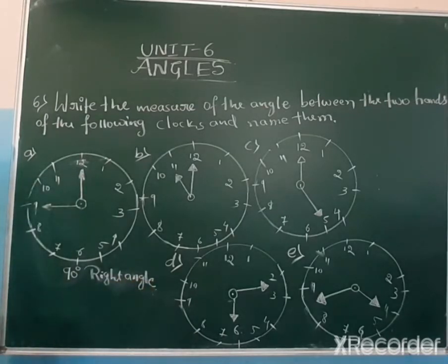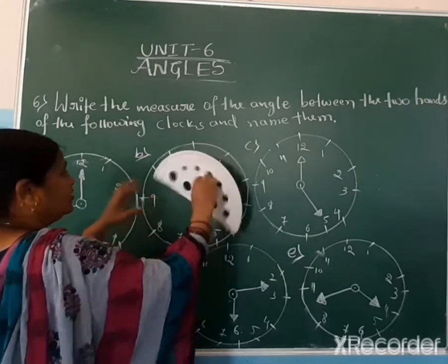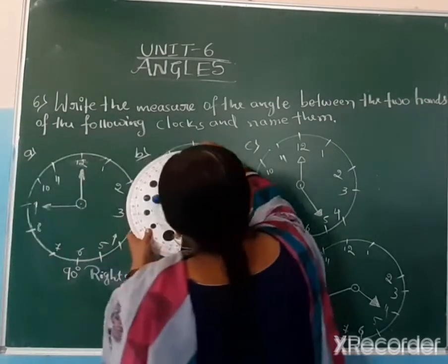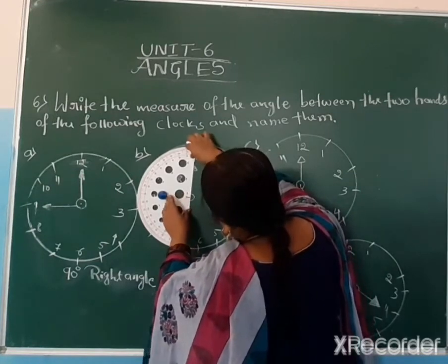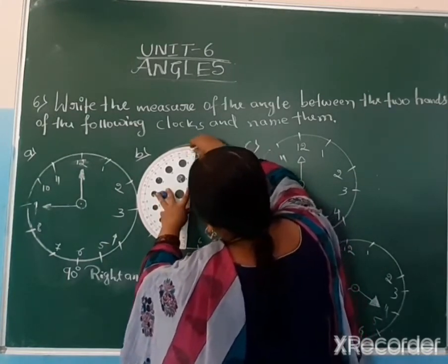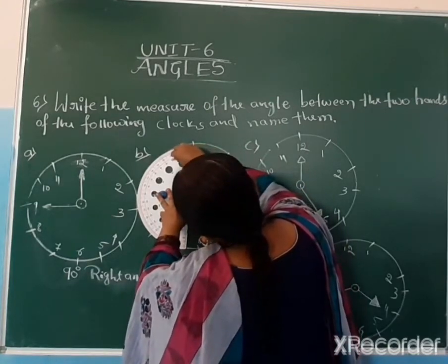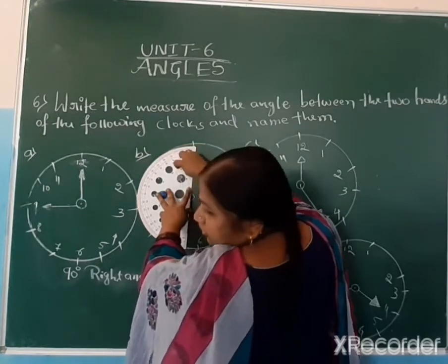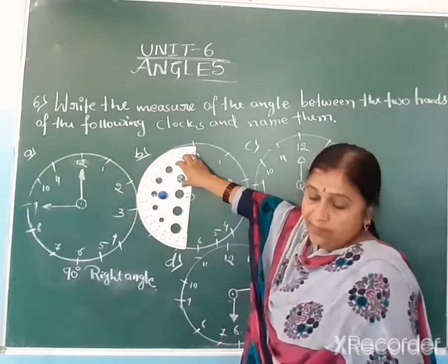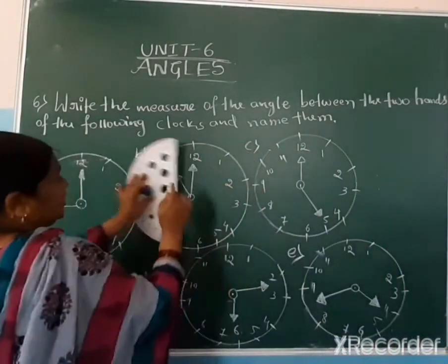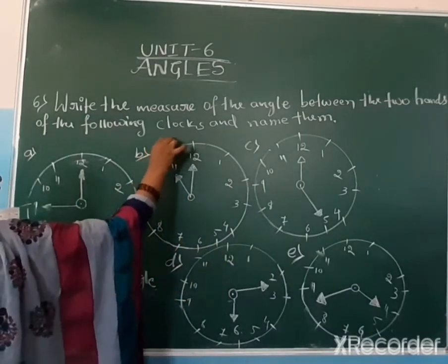Next, we are measuring clock B. We keep the center point and adjust one hand to the base. Now we start from inside measurement: 0, 10, 20, 30, 40. Where it crosses — 30 degrees.